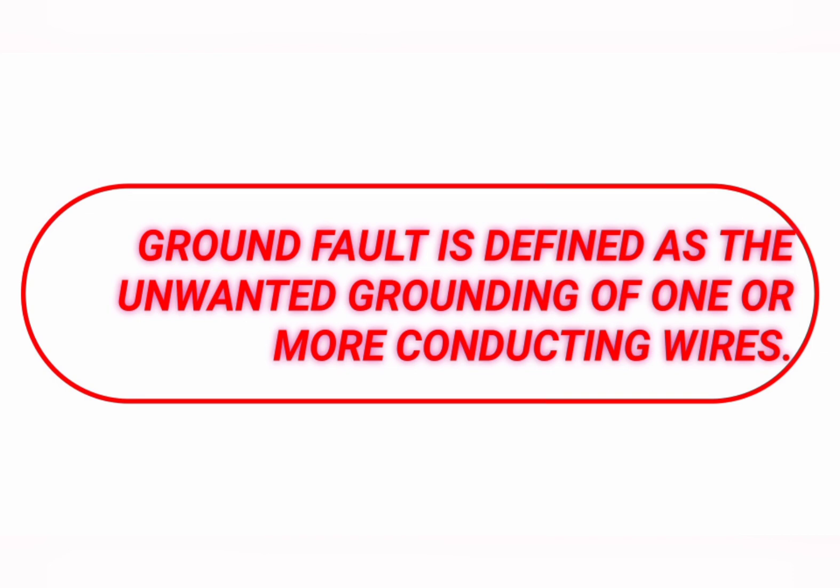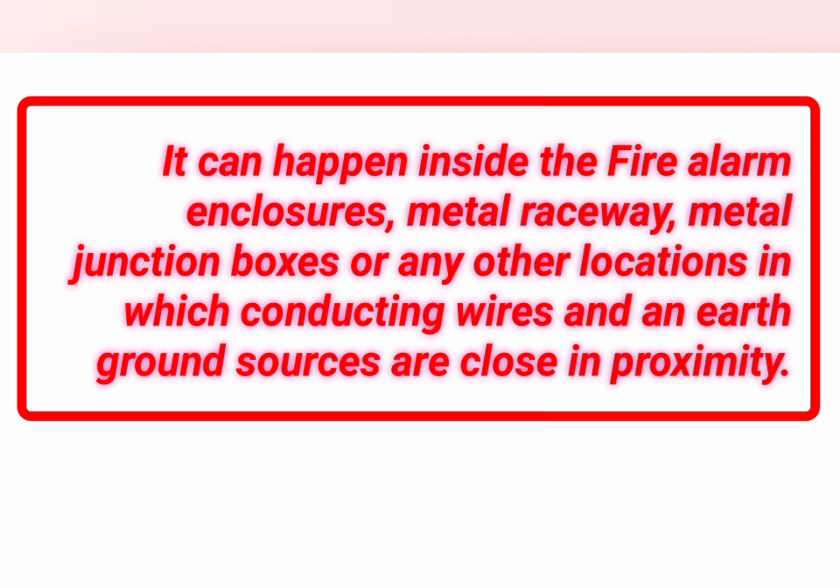What is ground fault? Ground fault is defined as the unwanted grounding of one or more conducting wires. It can happen inside the fire alarm enclosure, metal junction boxes, metal railway, or any other locations in which conducting wires and an earth's ground source are closer in proximity.